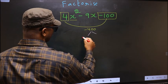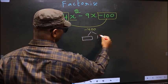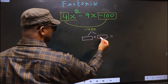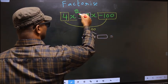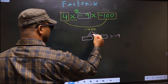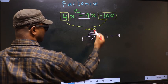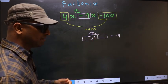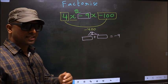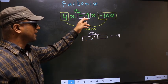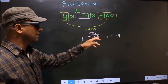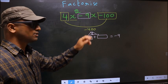Now you should look out for 2 numbers such that when you add these 2 numbers you should get the middle coefficient, minus 9, and also when multiplied you should get minus 400.